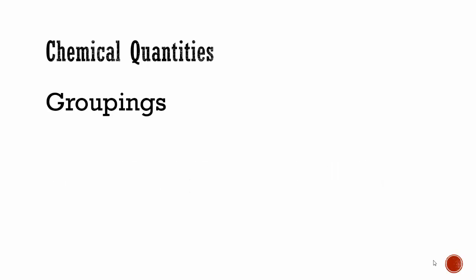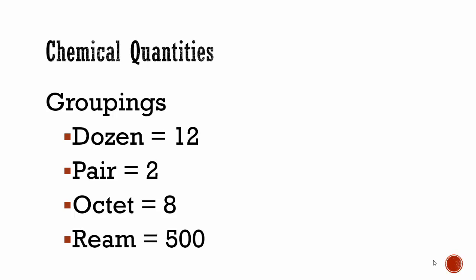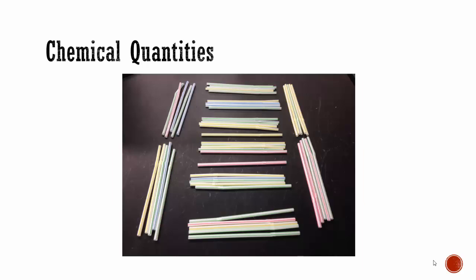You know lots of different types of groupings. For example, a dozen equals 12, a pair equals 2, an octet equals 8, a ream equals 500. Here you have some cards — there are 52 cards here, and you also say there's one deck. So one deck equals 52, and in this case a deck of cards equals 52 cards. If you count the straws here, you'll find that there are 52 straws. We know that one deck equals 52 of something, so we can say we have a deck of straws.